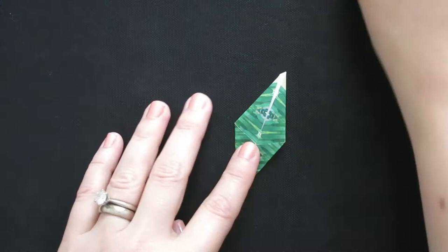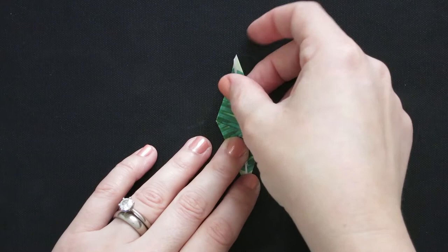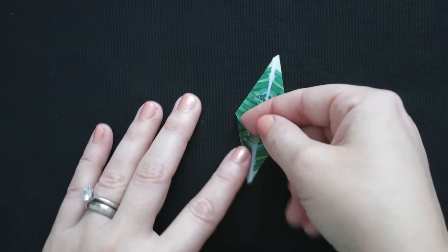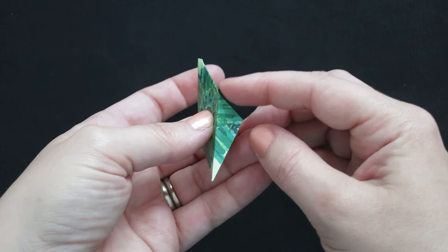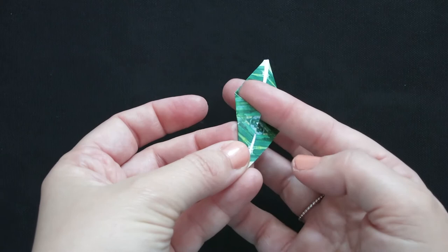So I've got these two bottom flaps that I've just created and I'm going to be using one of the edges of that triangle as a guide. So if I were to look at this flap I've just created, this edge right here is what I'm going to be using as the guide for the next fold.